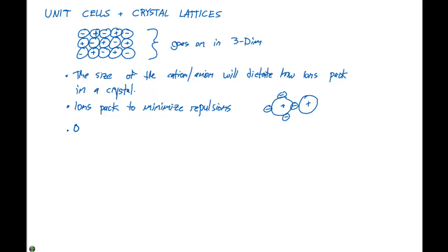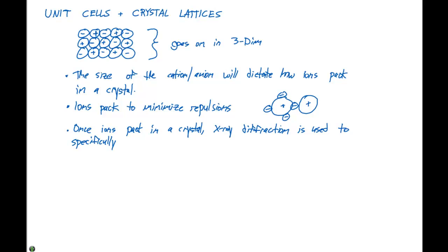Once ions pack in a crystal, X-ray diffraction is used to specifically determine the arrangement of atoms. We can get very detailed information about how these cations, anions, and atoms — approximated as spheres — pack together. With X-ray diffraction allowing us to view all of these things, while we won't use the techniques of X-ray diffraction, we're gonna use the results that we can get from this.